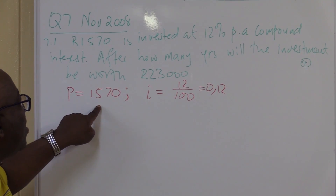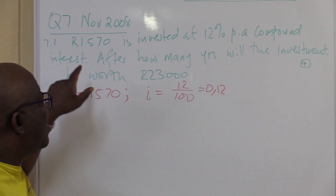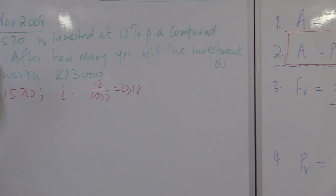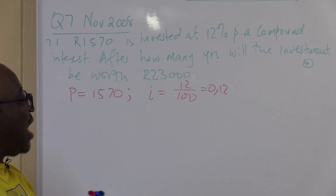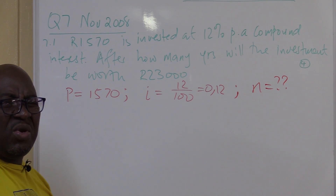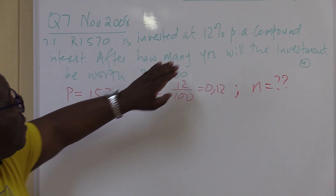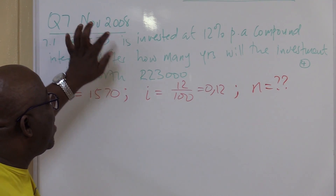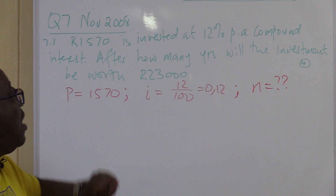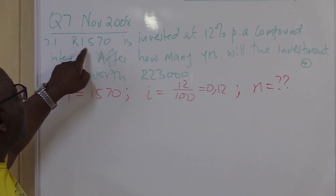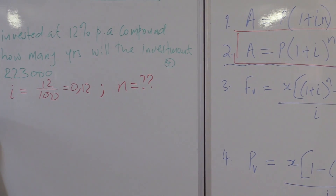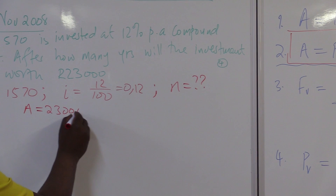R1,570 is invested at 12% per annum compound interest — I know that pushes me to this formula. After how many years? I know it is looking for n. Will the investment be worth R23,000? I'm putting in R1,570 at this interest rate. I don't know how long I'm leaving this investment, but I know that after a certain time this R1,570 will grow to be R23,000. What I put in — is it increasing or decreasing? It was R1,570, now it is R23,000; of course it increased. So I know that here I will have plus. And A is equal to R23,000.